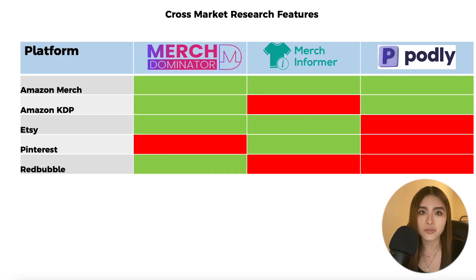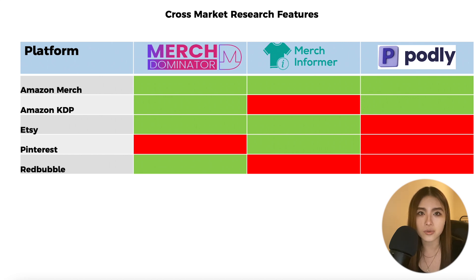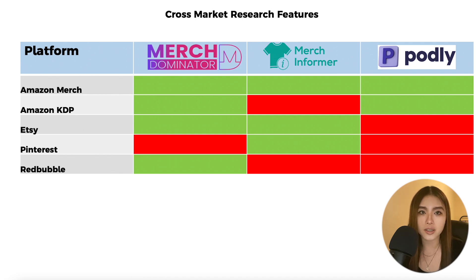Cross-market research features let you see bestsellers from places other than Merch by Amazon and KDP. I personally wouldn't focus on these too much since you can just visit the websites or use other research tools, but some people may find having everything packaged into one tool convenient. Merch Dominator does let you search and see bestsellers on Etsy and Redbubble as well.